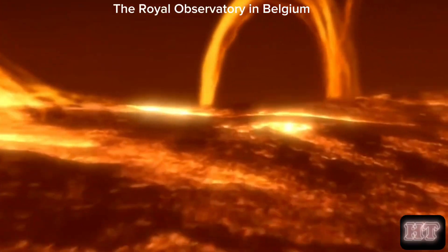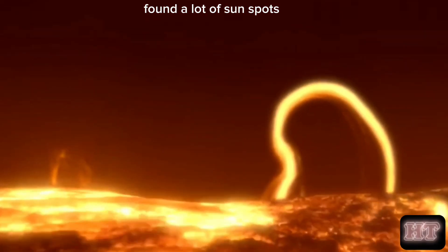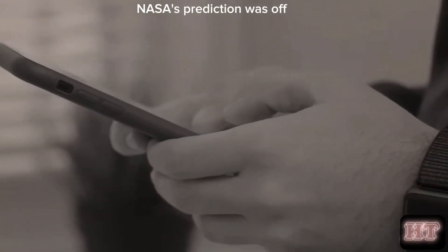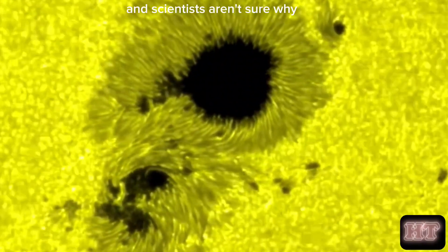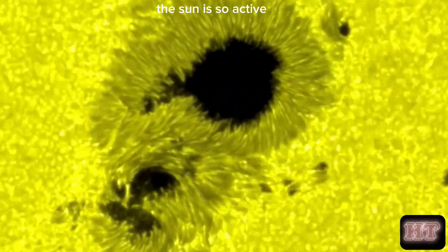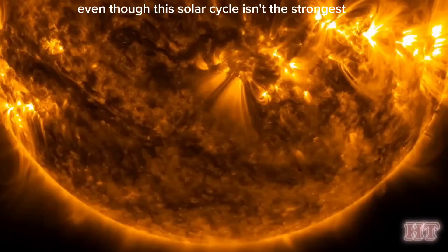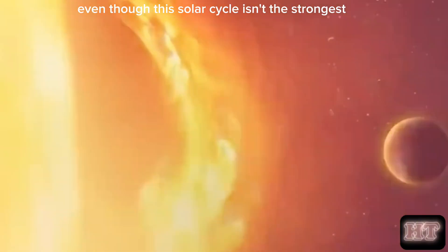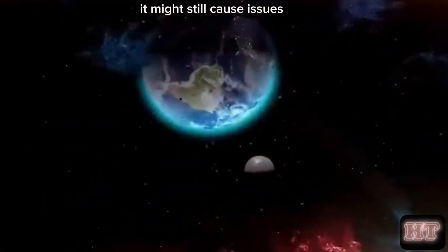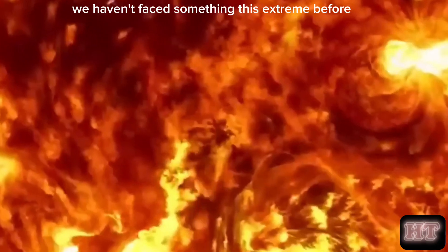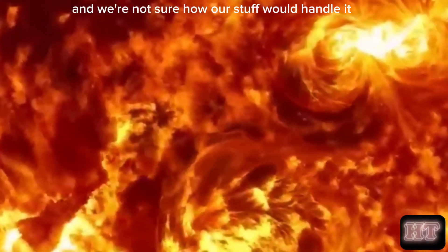The Royal Observatory in Belgium found a lot of sunspots, more than usual. NASA's prediction was off, and scientists aren't sure why the sun is so active. We need to study this more to understand what's happening. Even though this solar cycle isn't the strongest, it might still cause issues. We haven't faced something this extreme before, and we're not sure how our stuff would handle it.